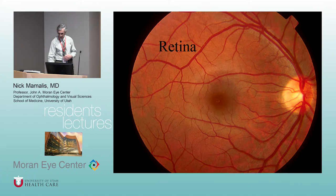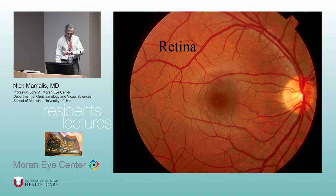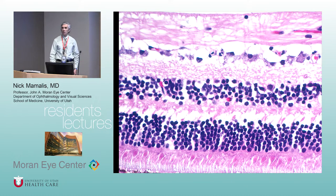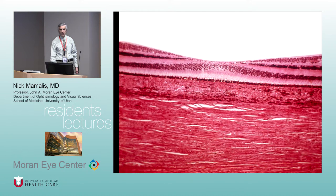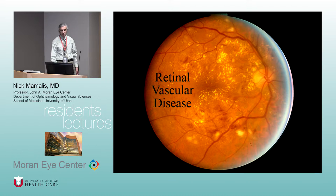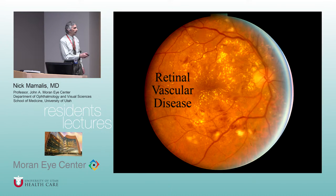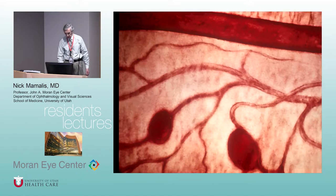Retina section. Know your layers — you may need to know what a hemorrhage in a particular layer signifies. In diabetic retinopathy: flame-shaped hemorrhages in the nerve fiber layer, dot-blot hemorrhages deeper, hard exudates, cotton wool spots, and microaneurysms. This patient likely has diabetic retinopathy with massive hard exudate and tremendous disruption of the retina.